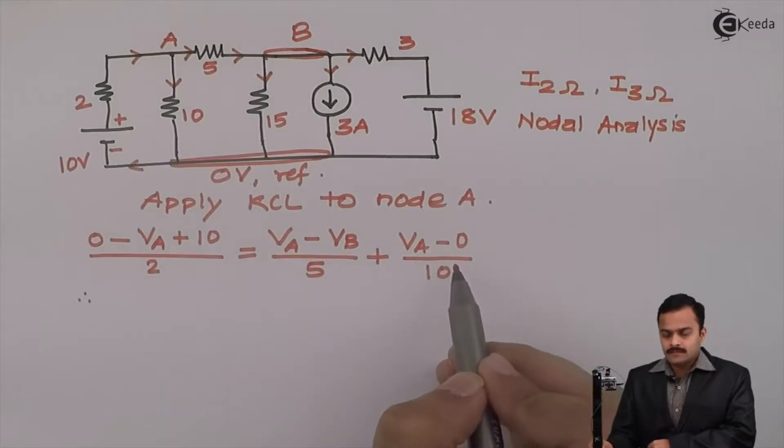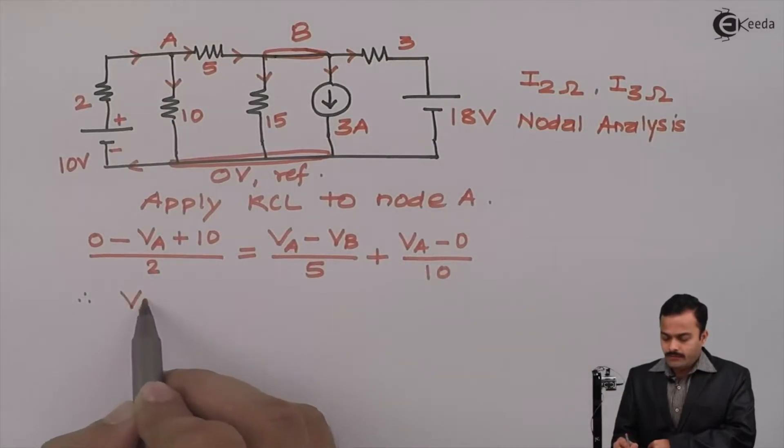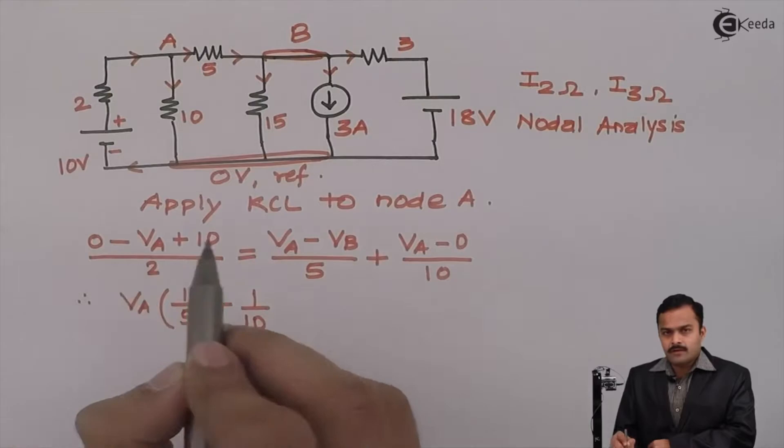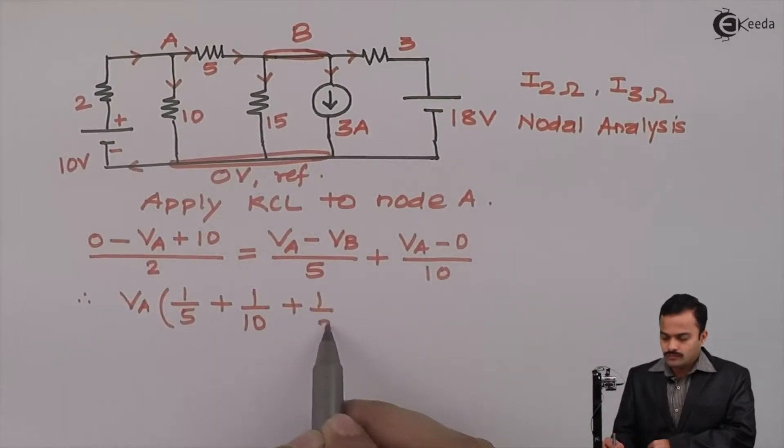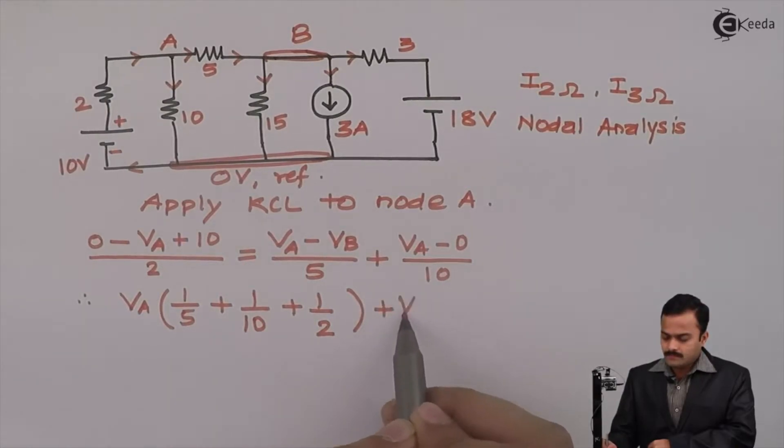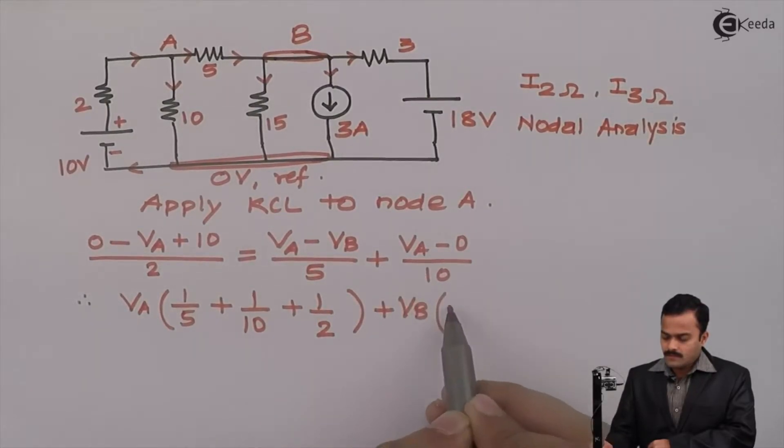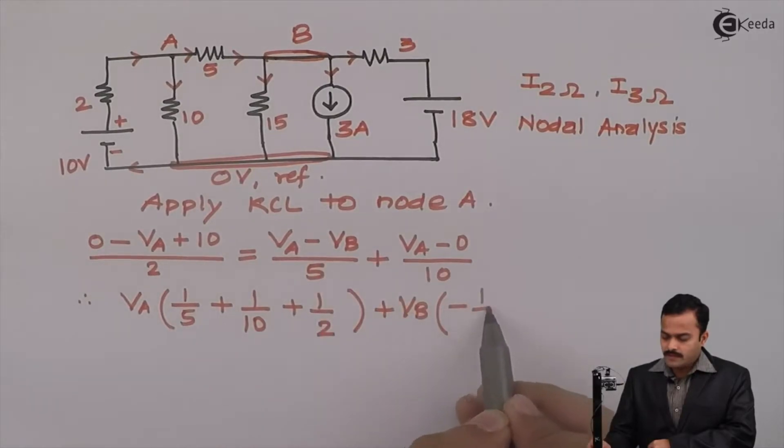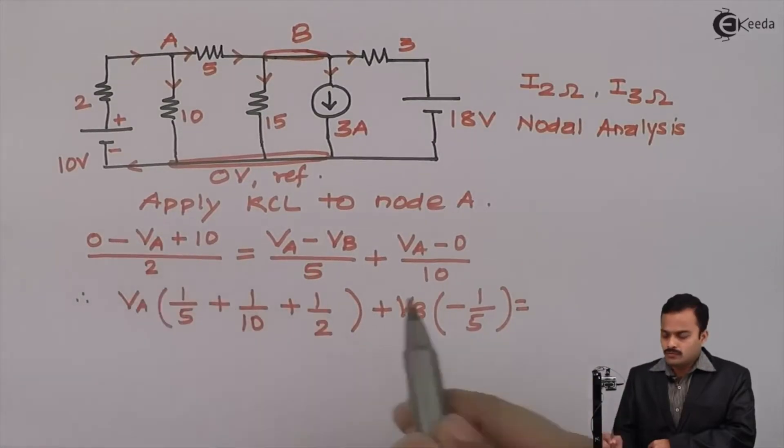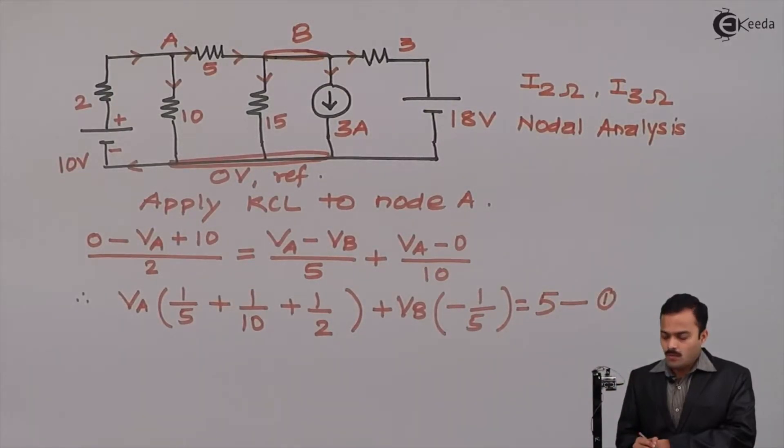Plus this is also outgoing current starting at A, ending on reference, so VA minus 0 divided by resistance is 10 ohm. So I can club all VA together. So it will be VA coefficient is 1/5 plus 1/10 plus 1/2. Coefficient of VB is minus 1/5 equal to constant 10/2 which is 5. So this will be equation number 1.